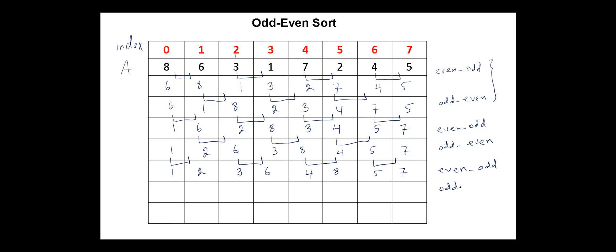Next again, now odd-even pairs. Two and three in their positions. Four and six, we swap them. Eight, five. We swap them. And these elements seven and one are the same.